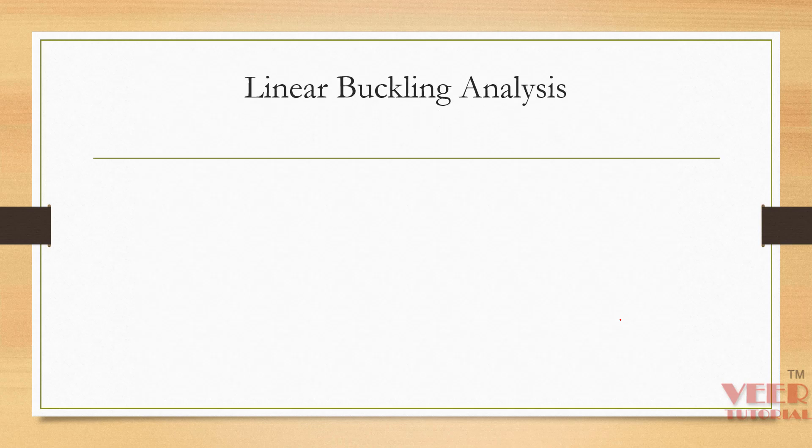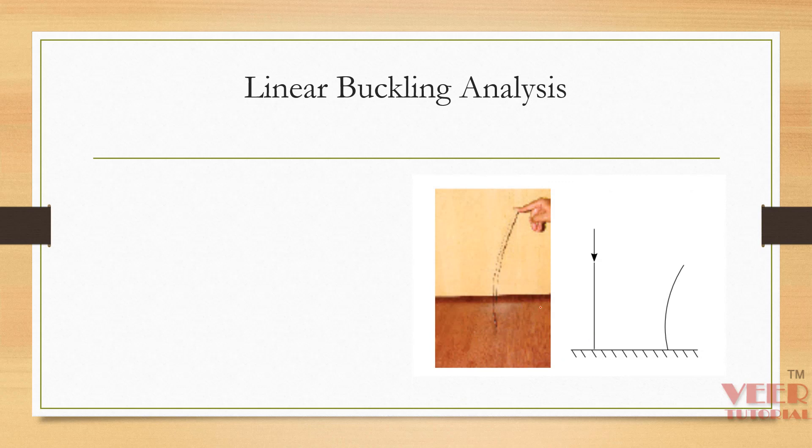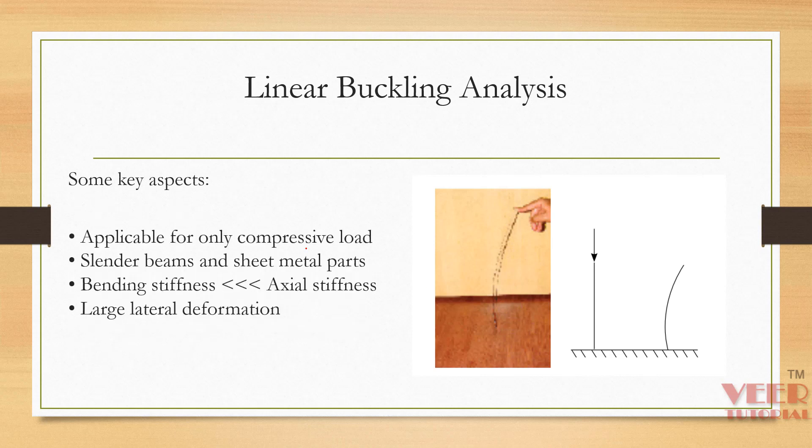Next we have linear buckling analysis. In buckling, for example, consider a rod where we apply a vertical downward force. Instead of breaking, it will buckle. In buckling analysis, we apply a compressive load to a slender body. Slender means the length of the body is very large compared to other dimensions.